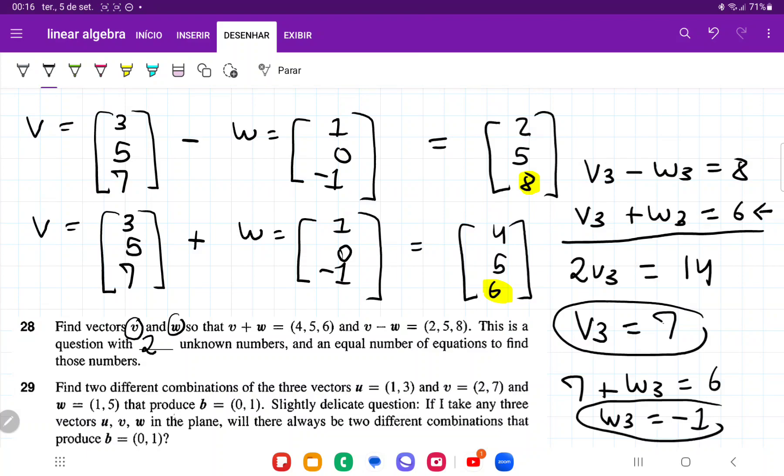That is it. We found v and we found w. This is v and that one is w, and we are done with number 28.